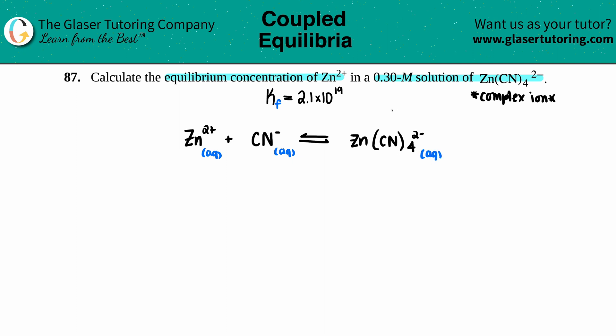They stated we're starting with 0.3 molarity of this complex ion. If you're starting with an amount, that's an initial amount. Anytime you have an initial amount when dealing with K values, you need the ICE table. So let's get our thoughts together and set up the ICE table.